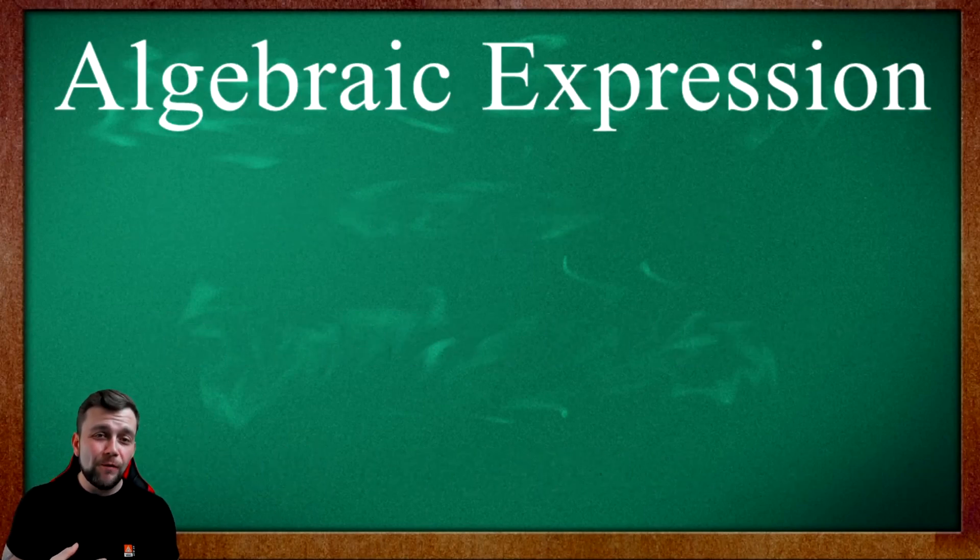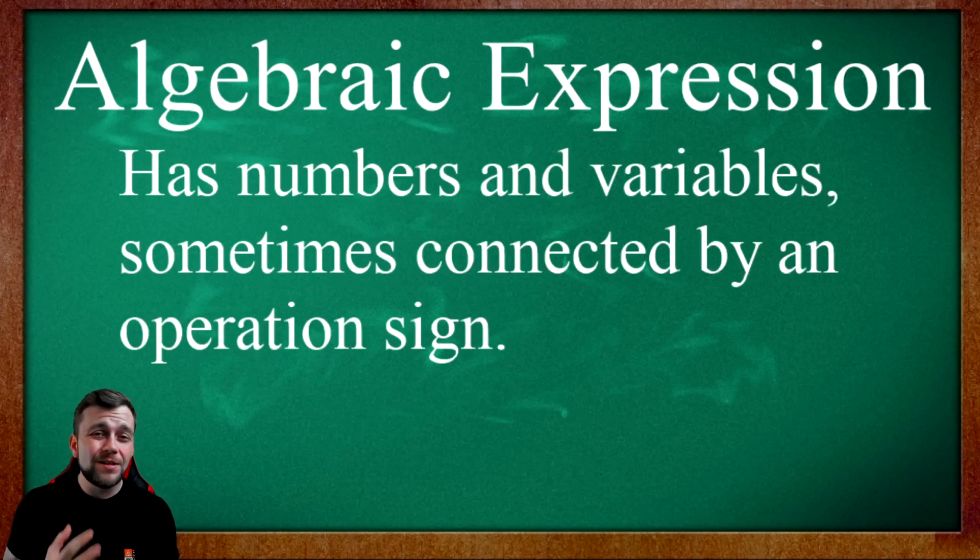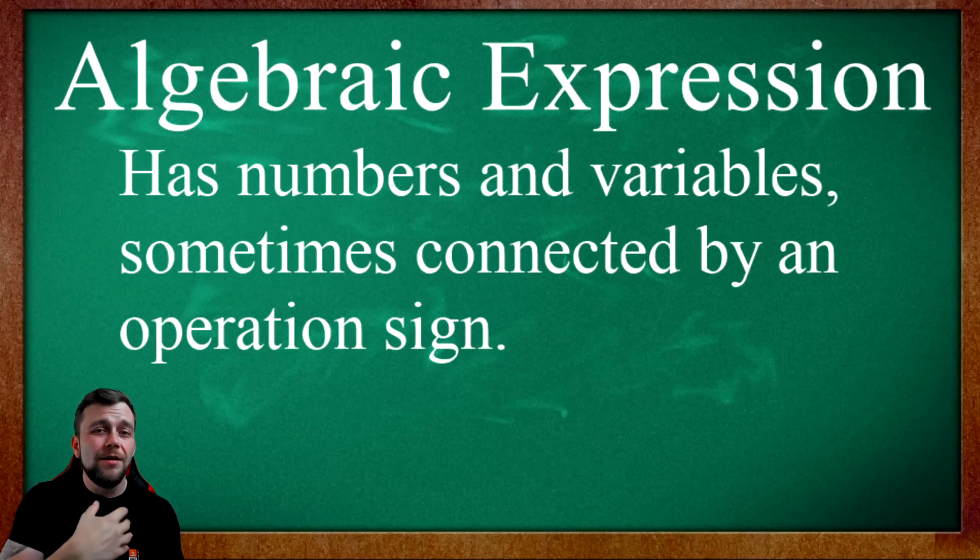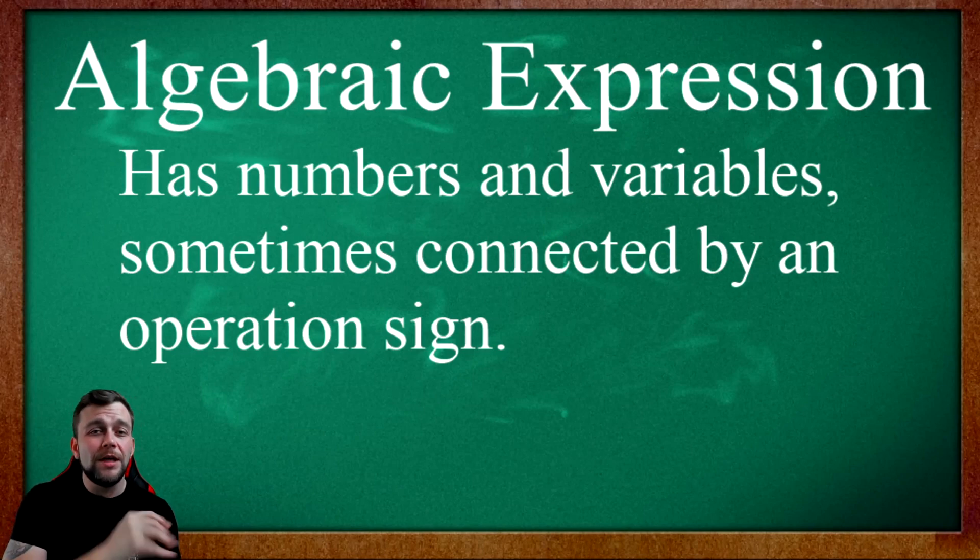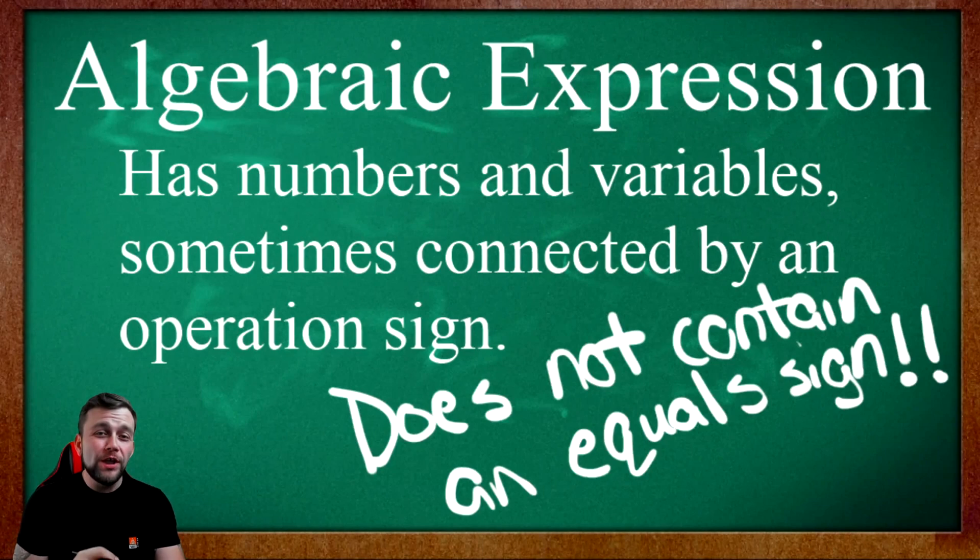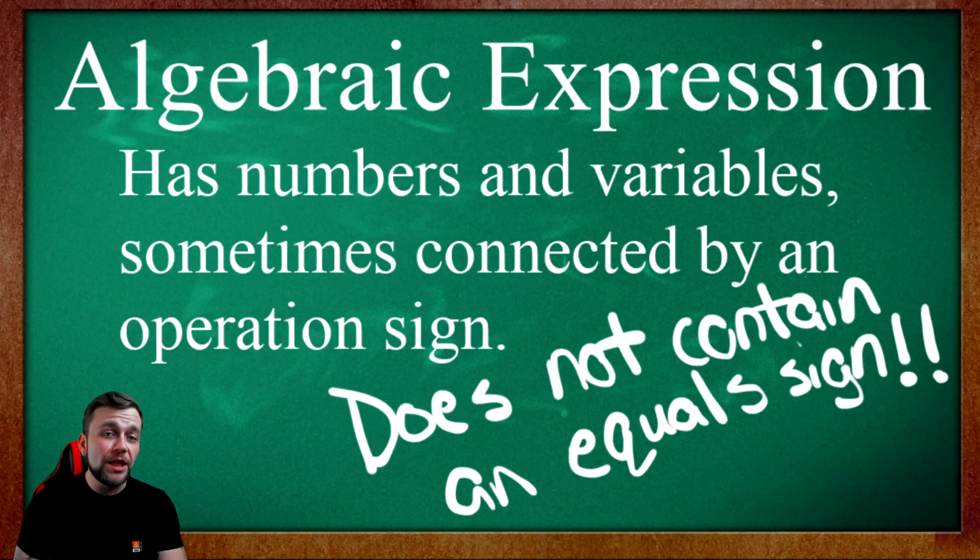Now that we have variables under our belt, let's define an algebraic expression. It has numbers and variables. Sometimes, operation signs separate the numbers and variables. It means that sometimes there's an addition sign, a subtraction sign, multiplication, or division. And it's separating out the variables from the integers, or other numbers. One of the main things to remember with algebraic expressions is that it does not contain an equal sign.